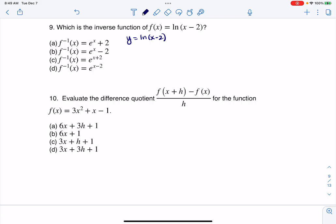meaning wherever you see the letter y, write an x. Wherever you see the letter x, write a y. So I'm going to rewrite this as x = ln(y - 2).